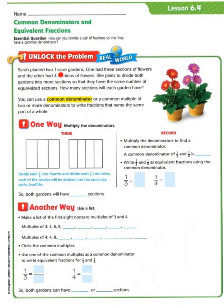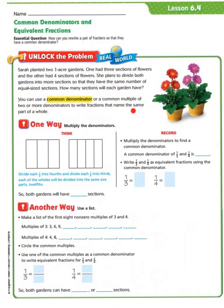Sarah planted two one-acre gardens. One had three sections of flowers, and the other had four sections of flowers. She plans to divide both gardens into more sections so that they have the same number of equal-sized sections. How many sections will each garden have? You can use a common denominator — a common multiple of two or more denominators — to write fractions that have the same part of a whole.